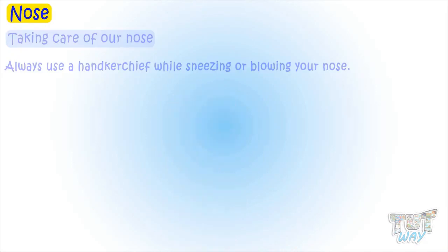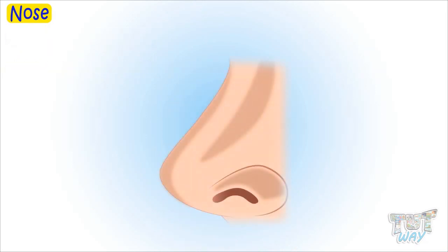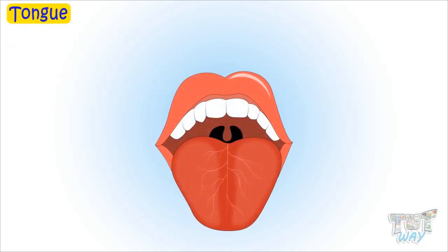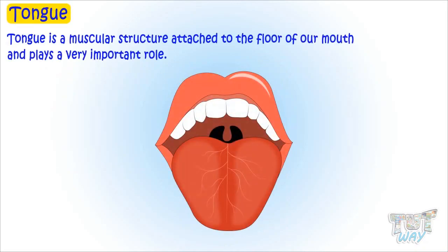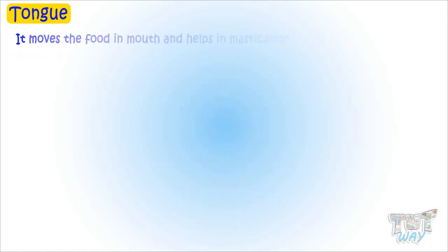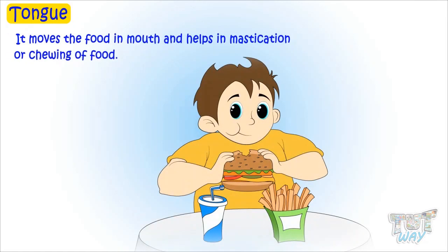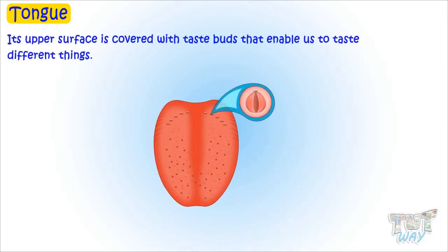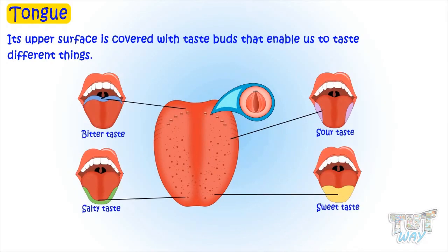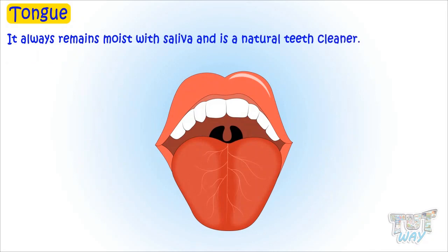So we have learned about our nose. Now we will learn about our tongue. The tongue is a muscular structure attached to the floor of our mouth and it plays a very important role. It moves food in our mouth and helps in mastication, or chewing of food. Its upper surface is covered with taste buds that enable us to taste different things. The tongue always remains moist with saliva and is a natural teeth cleaner.